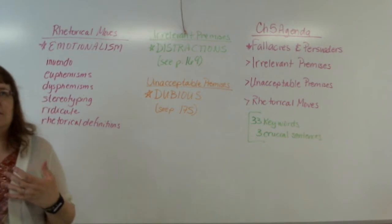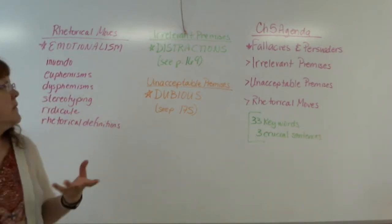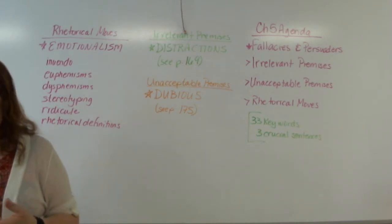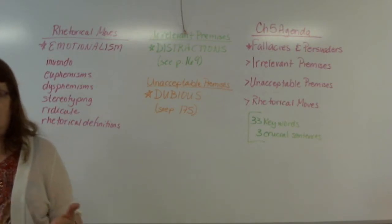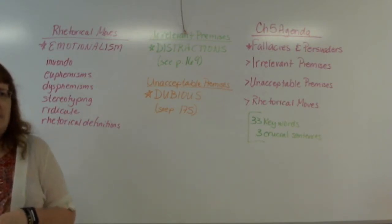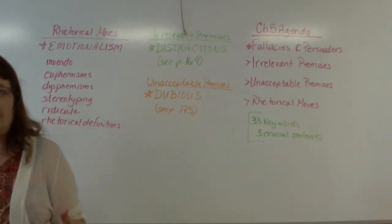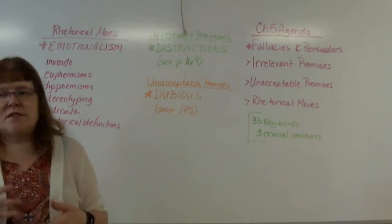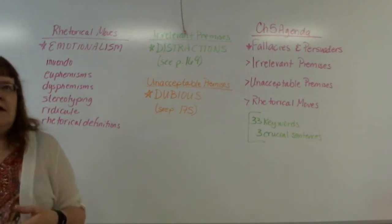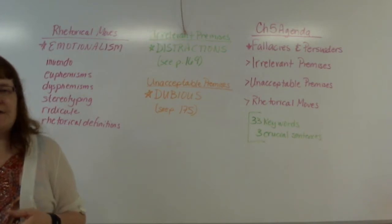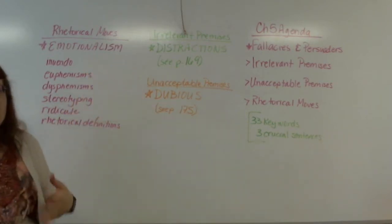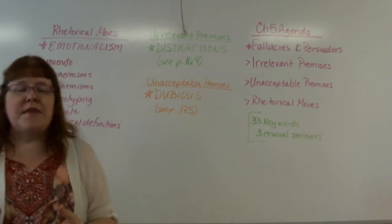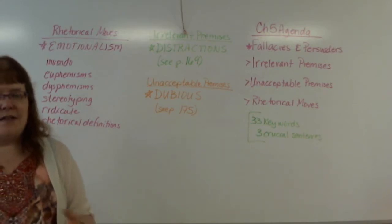Irrelevant premises are those fallacies that are distractions more than anything else. There are lots of ways we can mess up an argument — ways that keep getting used over and over again, so much so that we've developed names for them and ways to look out for them. That's really what this chapter is mostly about: calling our attention to ways that folks can throw up things in our way that we get distracted with, or that don't really actually help their argument, but they seem to.